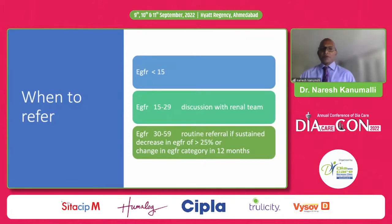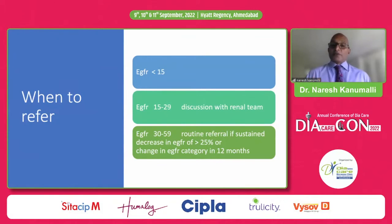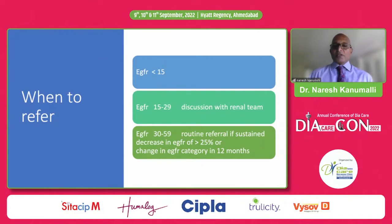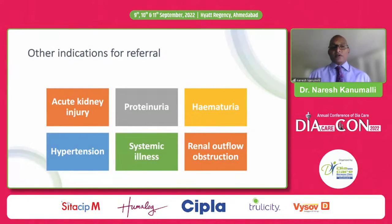For primary care referral: if eGFR is less than 15, refer immediately. eGFR between 15 and 29 warrants discussion with the renal team. For eGFR between 30 and 59, routine referral is needed if there is a sustained increase in eGFR greater than 25% or a change in eGFR category within 12 months — it's critical to look at the delta or change over time. Other referral reasons include acute kidney injury, proteinuria, hematuria, hypertension, systemic illness, and renal outflow obstruction.